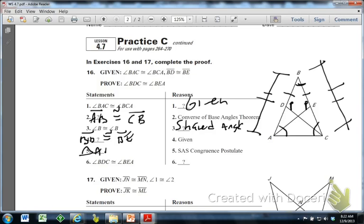Triangle ABE is congruent to triangle, let's see, ABE would be CBD. And that's by side angle side. And number six would be because corresponding parts of congruent triangles are congruent.